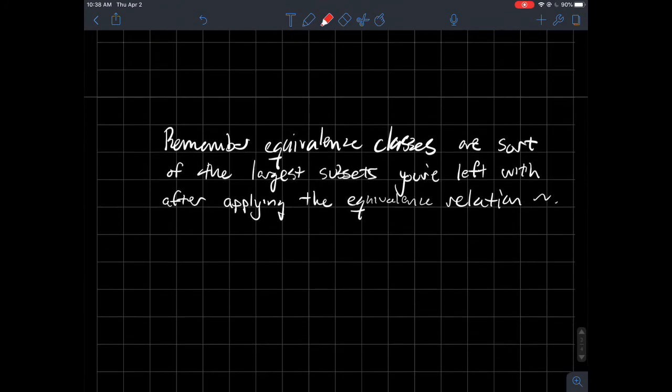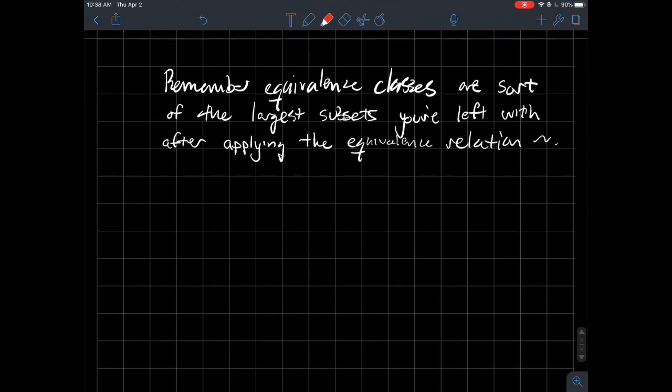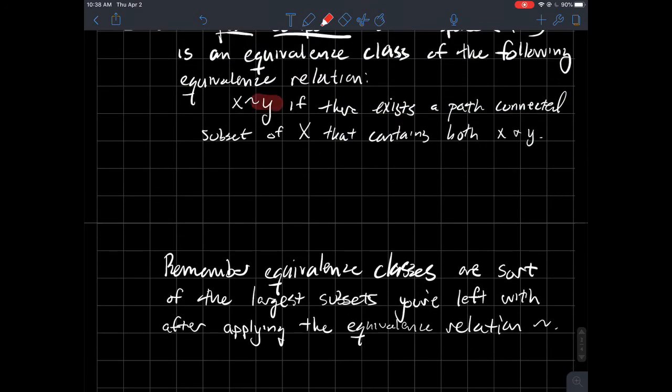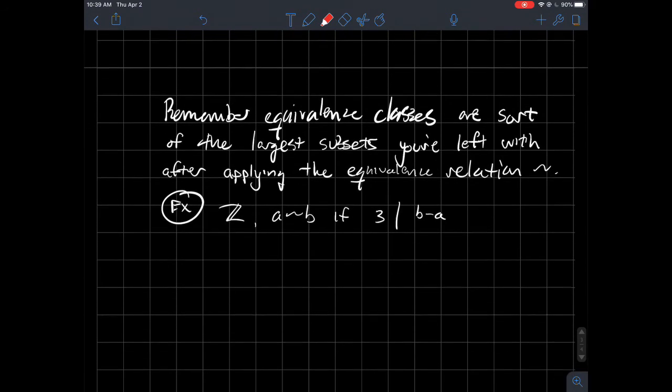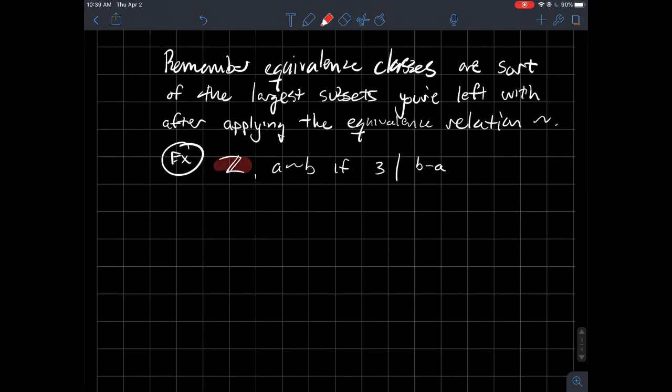Let me remind you about equivalence classes. So in some sense, they're sort of like the largest subsets that you're left with after you've identified all the things that are equivalent to each other. And I think we've had some experience with at least one equivalence relation so far. If you had the integers say, going back to maybe like the proofs class,